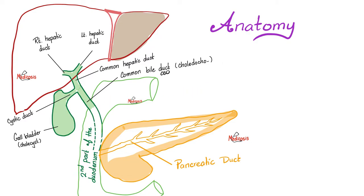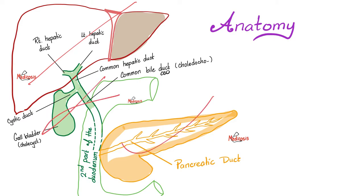If you want to absorb fat, the pancreas contributes its enzyme pancreatic lipase, and the bile contributes bile acids and bile salts. Together they are the duo that will break down and emulsify fat. When you digest fat, you'll be able to absorb fat. But if you have a problem in the liver, the biliary system, the pancreas, or the intestine, you won't be able to absorb fat — you'll get fat malabsorption, a condition known as steatorrhea. More on that later.